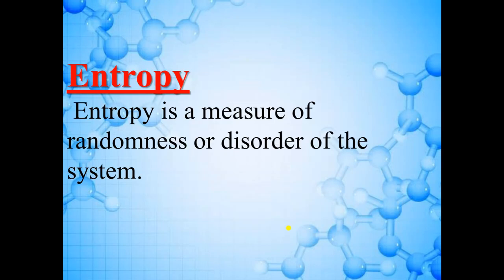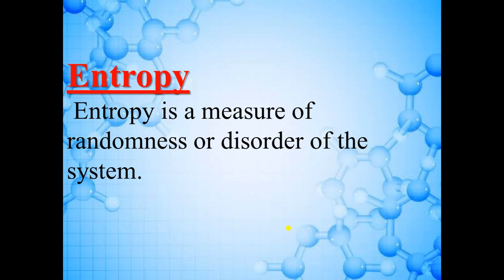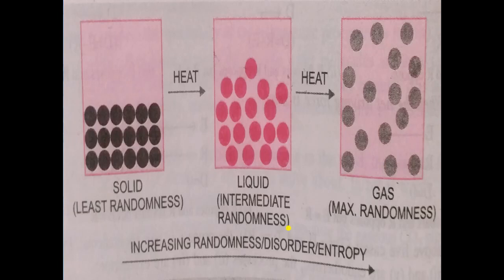Since the system absorbs heat, the same amount of heat is lost by the surrounding (the heat reservoir). So change in entropy of the reservoir = −Q_reversible / T. Total change in entropy ΔS_total = ΔS_system + ΔS_reservoir = Q/T + (−Q/T) = 0. When we compress the gas isothermally, volume changes from V2 to V1, heat is given out by the system and absorbed by the reservoir. So ΔS_system = −Q_reversible / T and ΔS_reservoir = +Q_reversible / T. Adding these also gives 0. Total change in entropy for the complete cycle is equal to 0, so entropy is a state function.